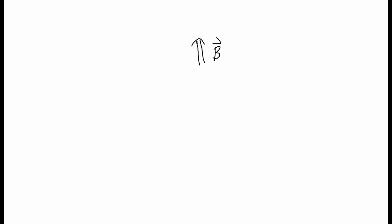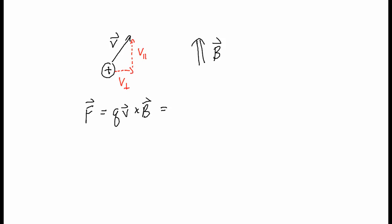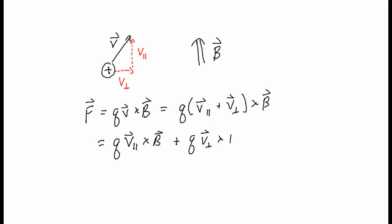Suppose I've got a magnetic field which points straight up and I've got a charged particle — we'll say it's positive — which points at an angle like this. We can break this velocity down into two components: a component which is perpendicular to the field, which I'll call V_perp, and a component which is parallel to the field, which I'll call V_parallel. We can write the force on this particle as QV cross B, where I break V down into the parallel piece and the perpendicular piece, and distribute the cross product over the sum.